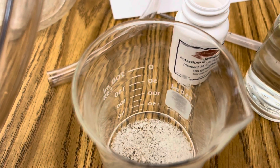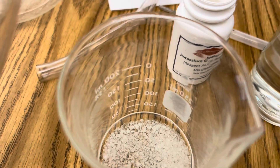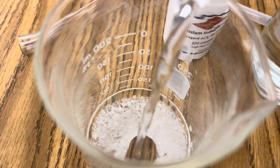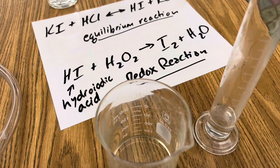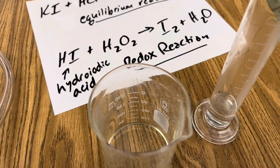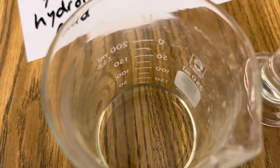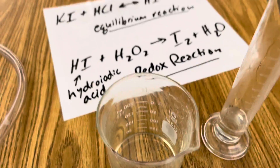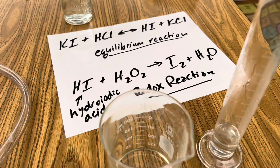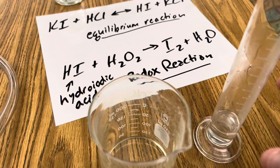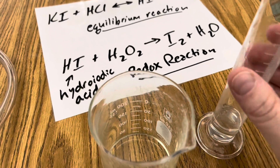The first step in this reaction is to add your distilled water to your potassium iodide. Once you can see that the potassium iodide is dissolved in your water, you're ready to add your 10 mils of hydrochloric acid.